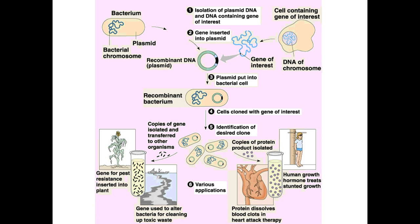Looking at some of the other applications: growth hormone is produced this way for people that have dwarfism — recombinant bacteria tricked into making this protein for therapeutic purposes. This approach isn't limited to just humans; we can genetically modify bacteria, plants, and many other organisms.